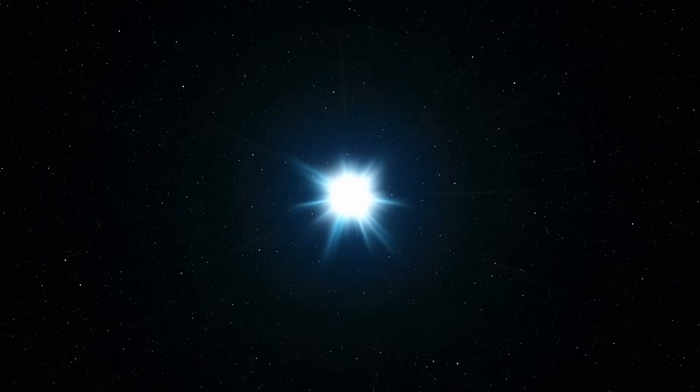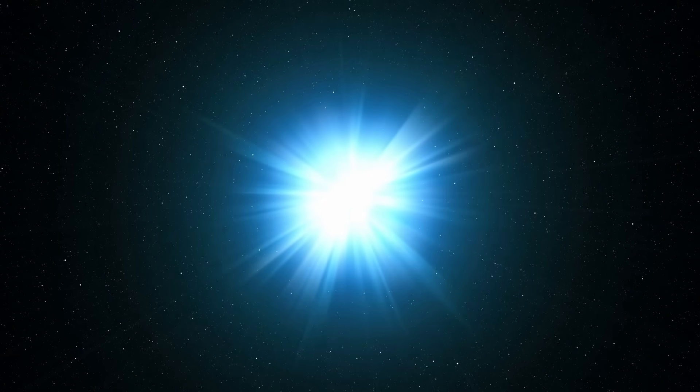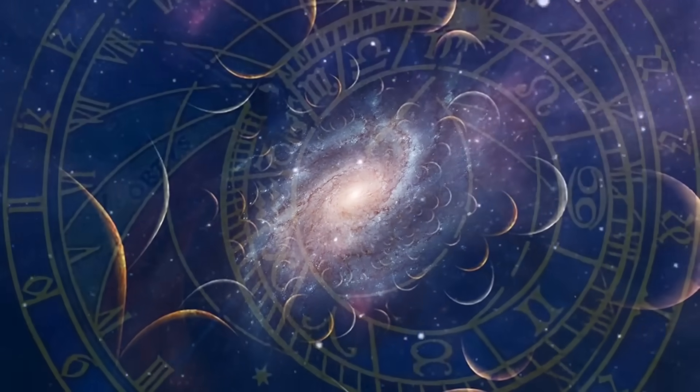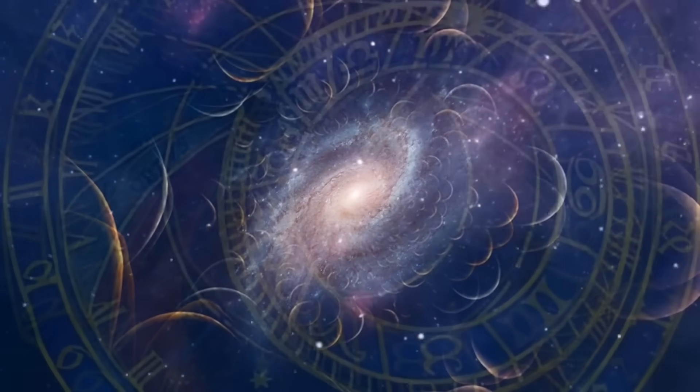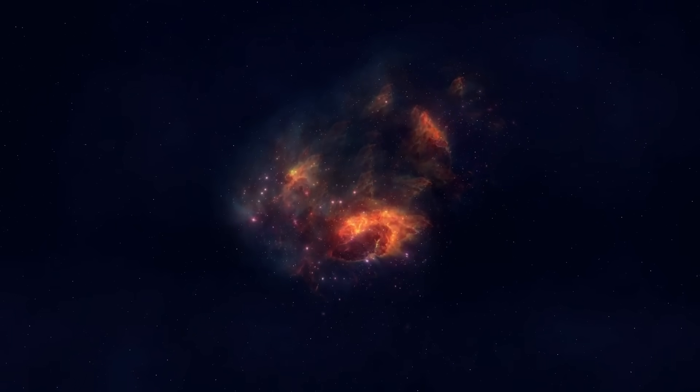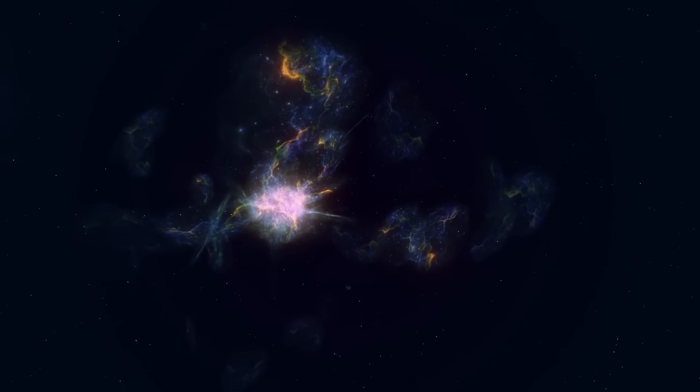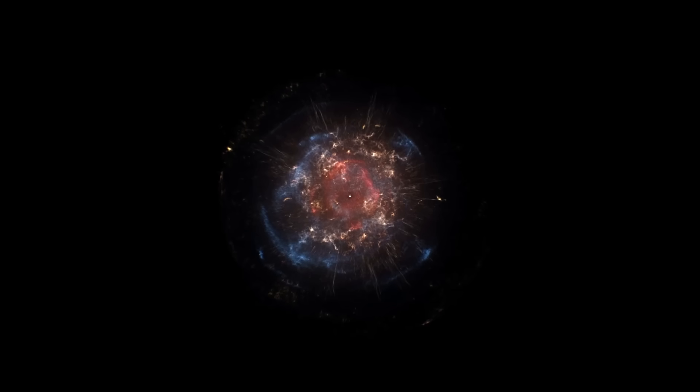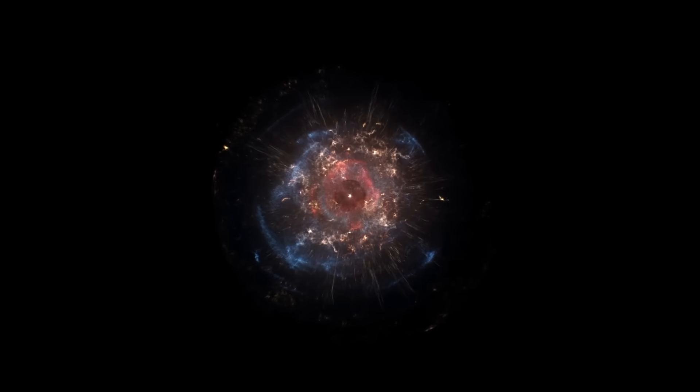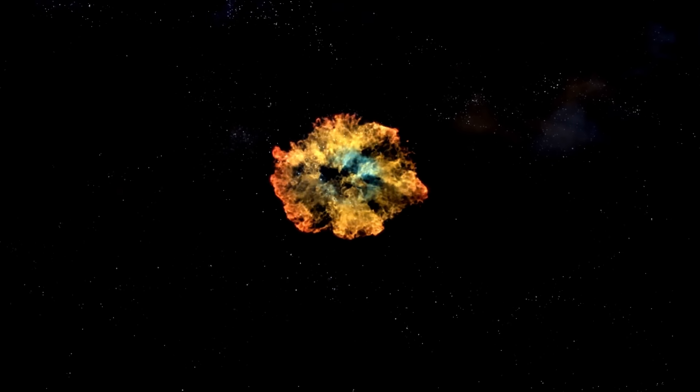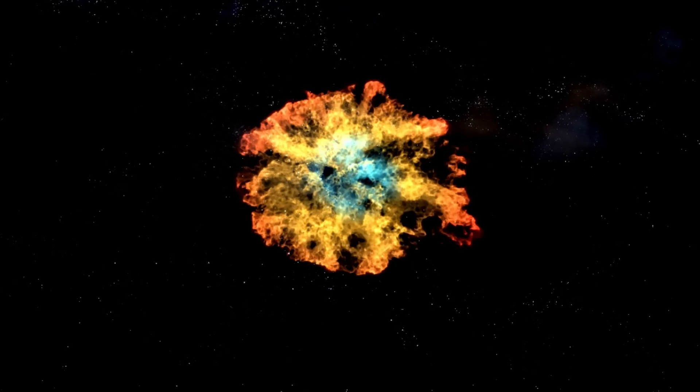But as orbital models were run, as data crunched through the algorithms, an unease began to stir. This object was not looping gracefully around the sun. It was on a hyperbolic trajectory, a path unbound, a visitor from the void. It had entered our neighborhood from deep interstellar space, here for a brief singular pass before vanishing forever. They named it 3.i, the third confirmed interstellar object humanity had ever seen.